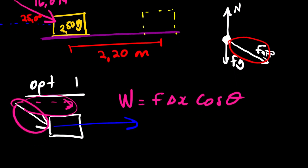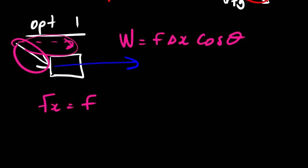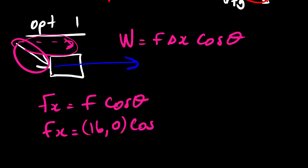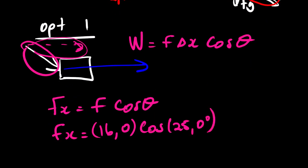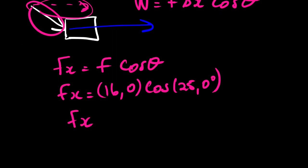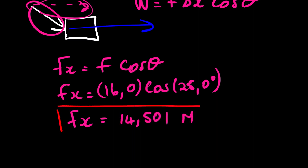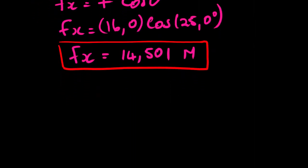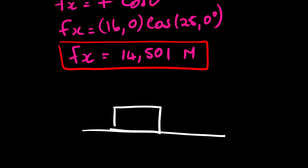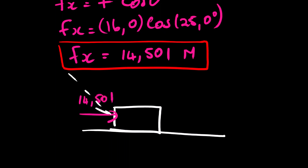For option one, we start by calculating the x-component of the force. Fx equals F cos θ, so Fx equals 16.0 times cos 25.0 degrees, giving us 14.501 Newtons. Since the force is in this direction, we translated it so it becomes parallel to the displacement. Our new force is now in this direction and is 14.501 Newtons instead of 16.0 Newtons.